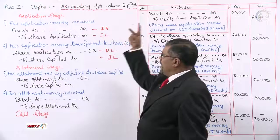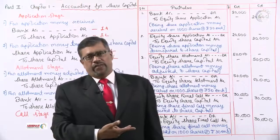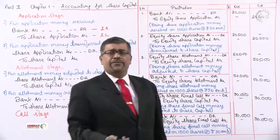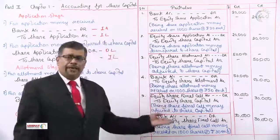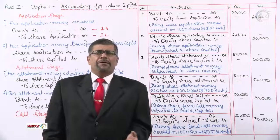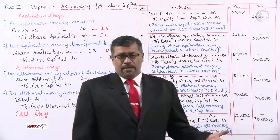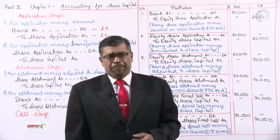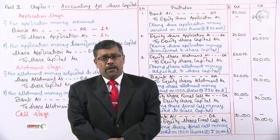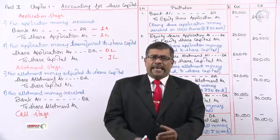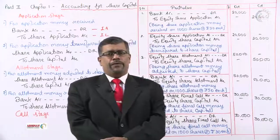This demonstrates that there are two entries in application, two on allotment, and two on first and final call. As we proceed further, there will be more entries — because sometimes shareholders may not pay, or some may pay calls in advance. We'll cover those scenarios in upcoming sessions. In this session we completed the first problem on accounting for share capital. In the next session we'll learn call scenarios and take up problem number two.